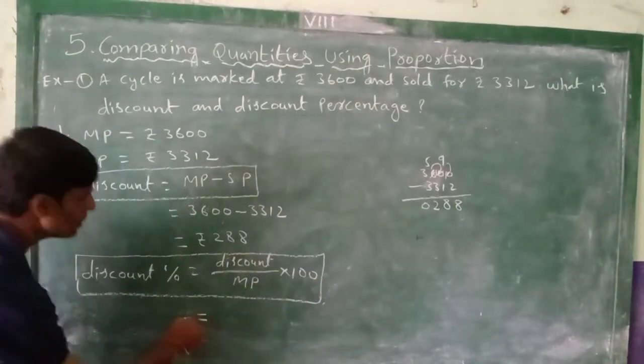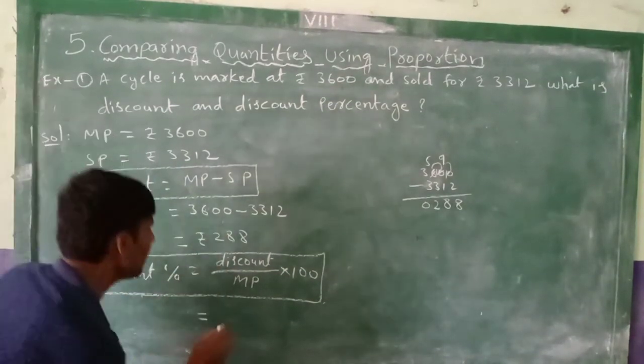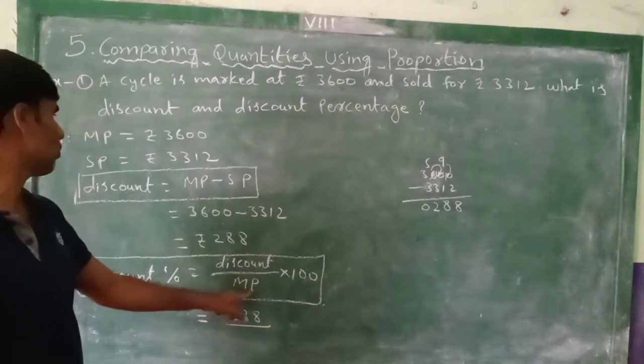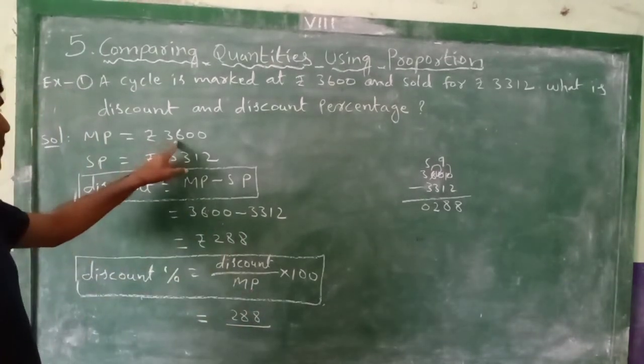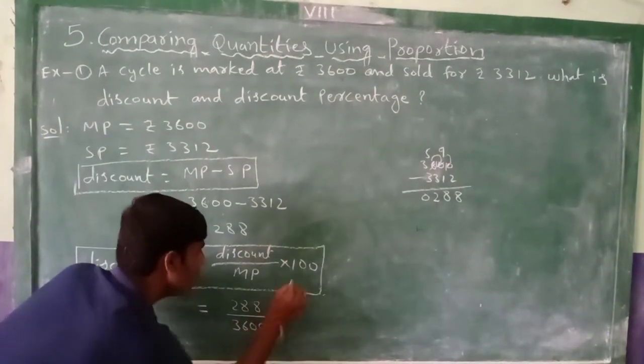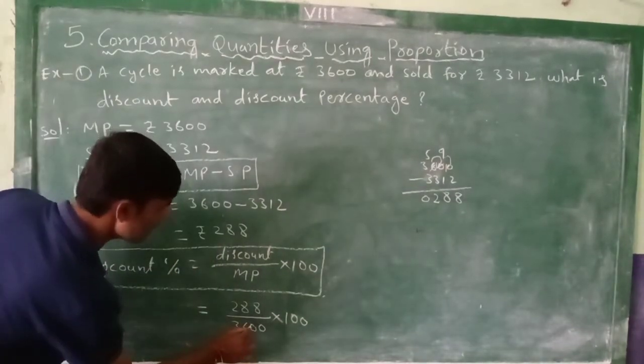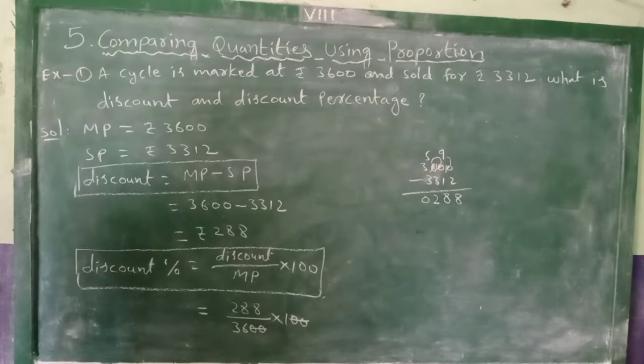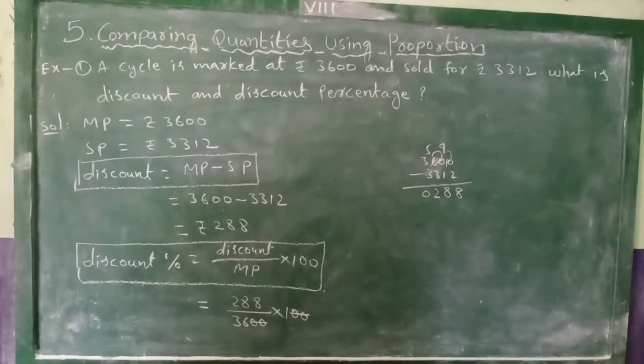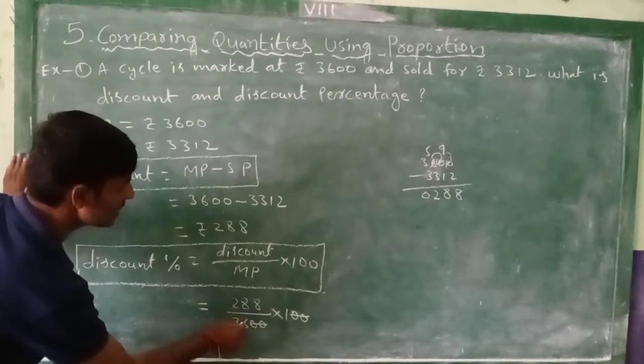Discount equal to 288 divided by marked price equal to 3600 into 100. So simply we can cancel these two, cancel it. Again here we can cancel these two. 3600, we can cancel 3600 and these both.